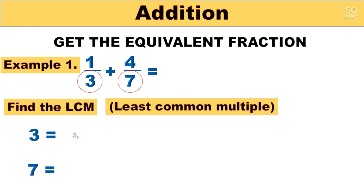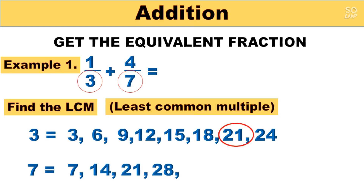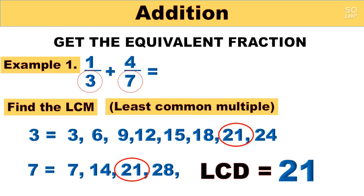We have 3 and 7. Multiples of 3: 3, 6, 9, 12, 15, 18, 21, 24. Multiples of 7: 7, 14, 21, 28. We will choose the closest common multiple of the two denominators 3 and 7, which is 21. So that will be our LCD — the least common denominator. Our LCD is now 21.